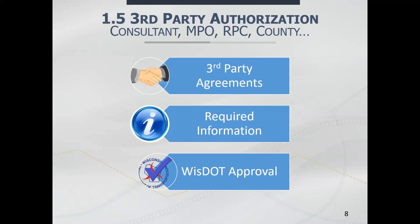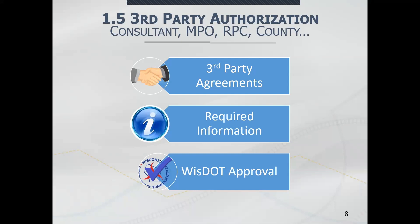Can you have a third party do your pavement rating submittals for you? The answer is yes. It can be either a consultant, a metropolitan planning organization, a regional planning commission, or a county planning organization. Your local chair should send your municipality information and the third party's information to Wisconsin DOT by paper mail or email, granting that third party authorization to submit your pavement ratings. This cannot be done by phone. Wisconsin DOT will send a receipt of notice and confirm within three business days.